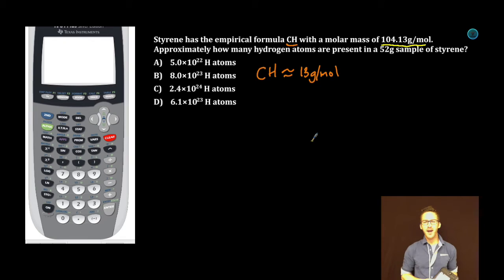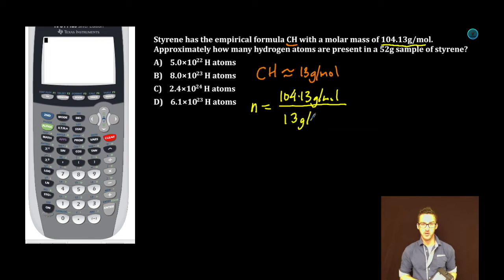So let's figure out how many times bigger our molecular formula is than the empirical formula. We got 104.13 grams per mole, we're comparing that to 13 grams per mole. Now we don't get to use a calculator here. How am I going to do this? The number 10 is super handy on problems on the multiple choice. Thinking in my brain, 13 times 10 is 130, so it doesn't quite go in there 10 times. This would be 10 times.